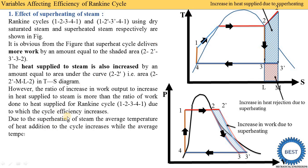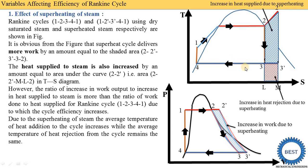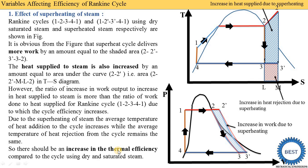Due to superheating of steam, the average temperature of heat addition to the cycle is increased — the temperature moves from point two to two-dash. The average temperature of heat rejection from the cycle remains the same. By Carnot efficiency principles, a higher temperature of heat addition increases efficiency. Therefore, there shall be an increase in thermal efficiency compared to the cycle using dry and saturated steam. This completes the first method: the effect of superheating the steam.